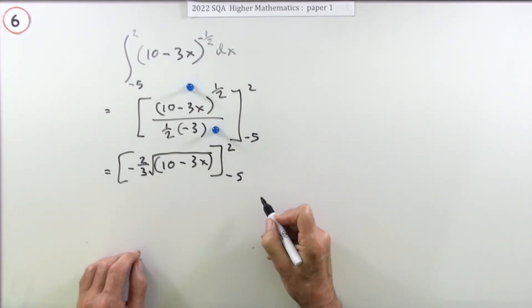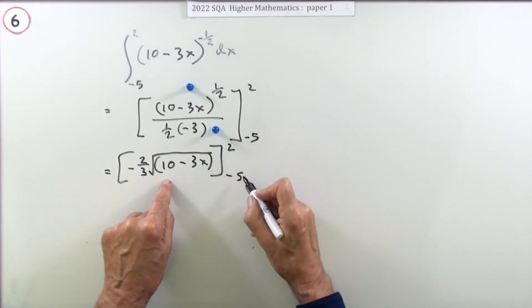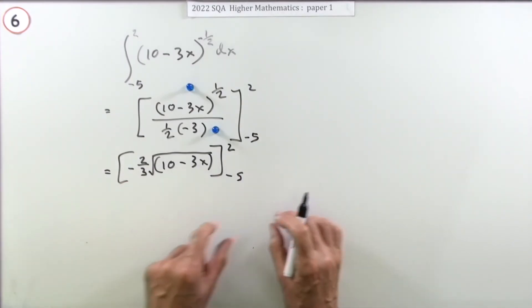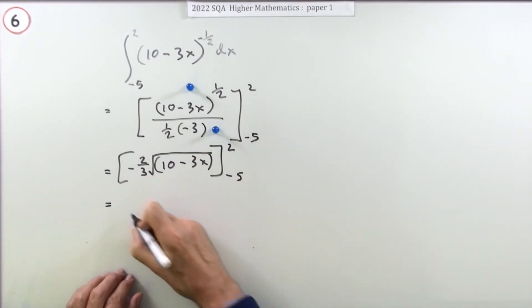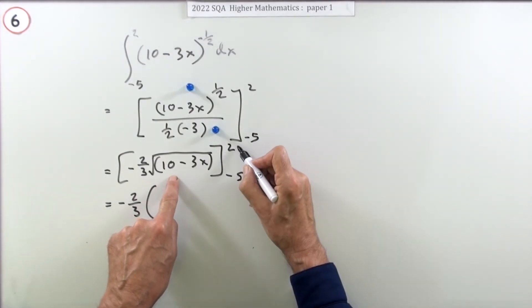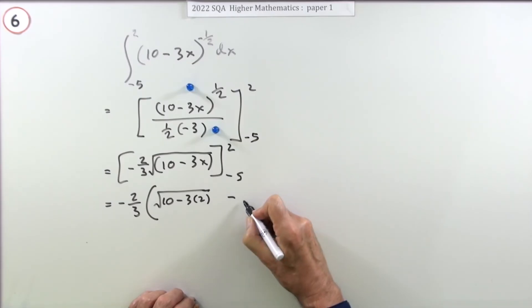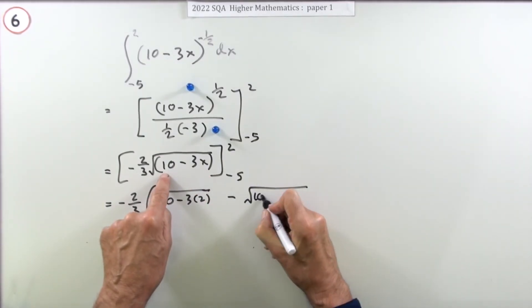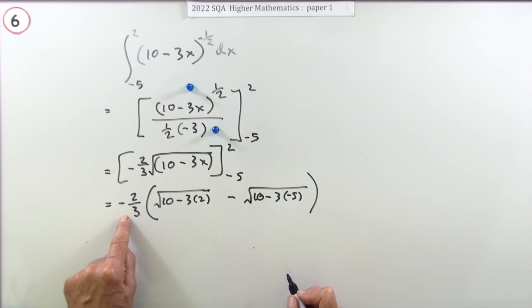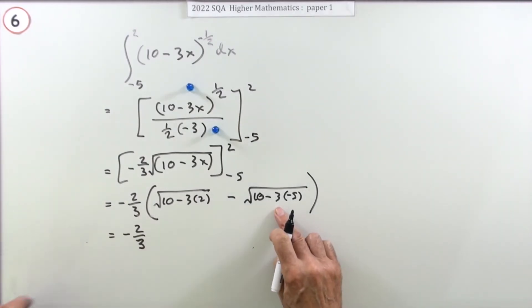There are still no marks yet at this stage. That negative two thirds is going to multiply both answers, so take it outside rather than writing negative two thirds times each part separately. Evaluate at the top limit first: square root of 10 minus 3 times 2, minus the value at the lower limit: 10 minus 3 times negative 5. Starting to evaluate gets the next mark.